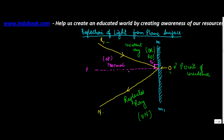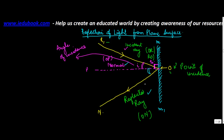There are two things which are important to note here. The angle formed by the normal with the incident ray is denoted by i and is known as the angle of incidence. Similarly, this angle which is formed by the normal with the reflected ray is known as the angle of reflection.